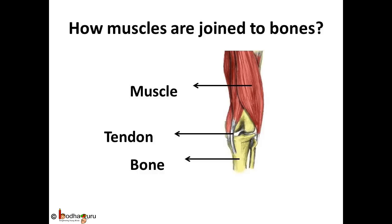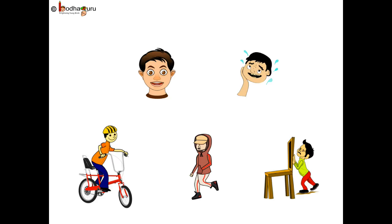So how are muscles joined to the bones? The muscles are attached to the bones by strong fibers called tendons. Every time you walk, settle into a chair, or hug your mother, you are using your bones, muscles, and joints. Without these important body parts, we wouldn't be able to stand, run, or even sit down.